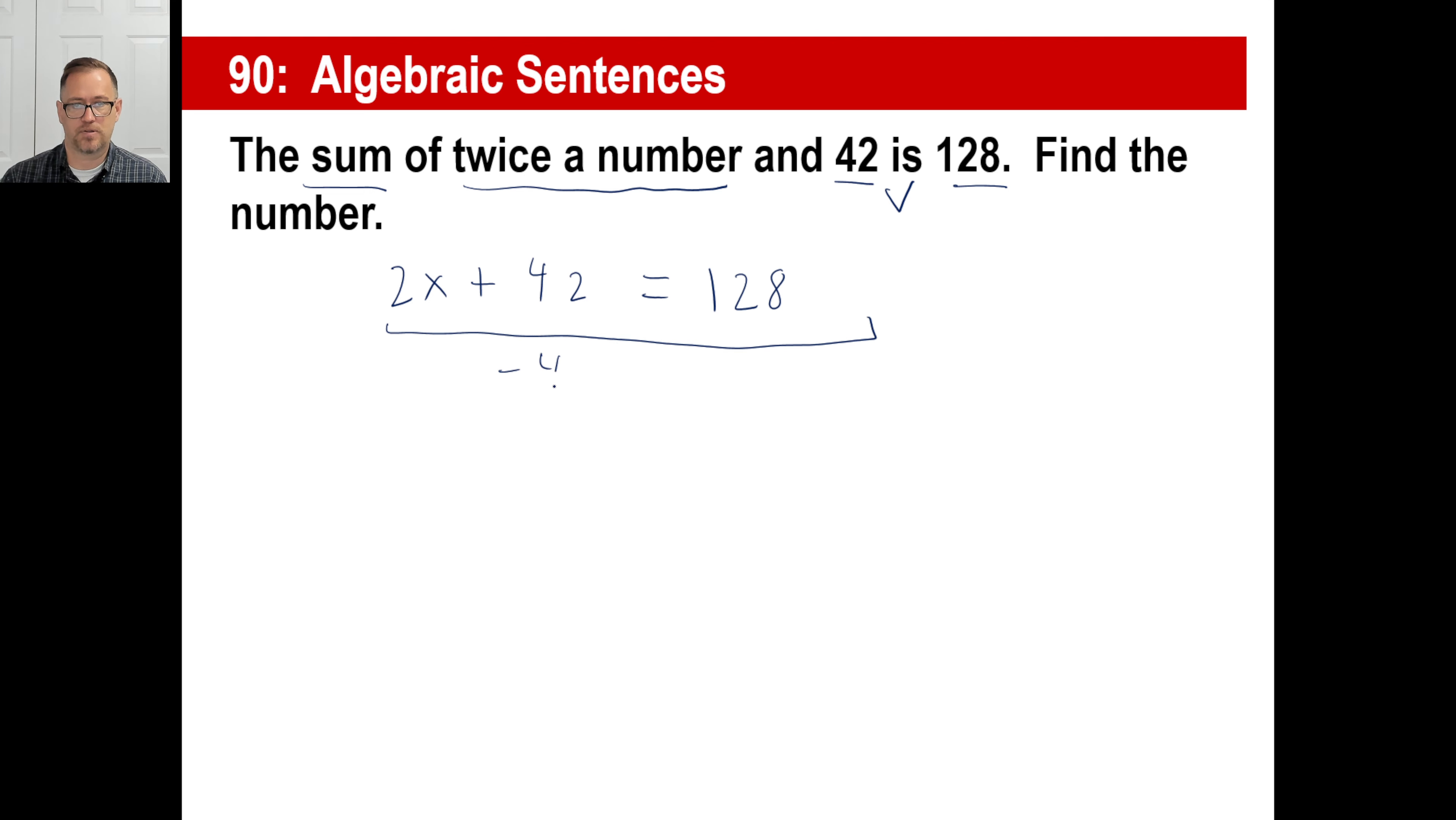Now it's easy. I just subtract 42. 2x equals 86 divided by two. And that's going to be 43. I got it. There we go.